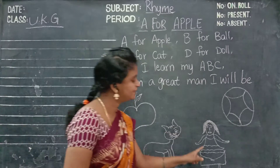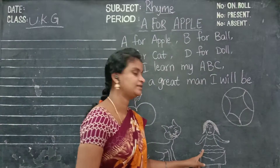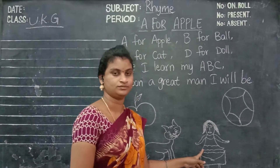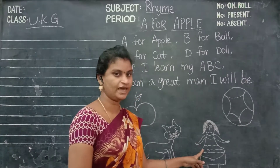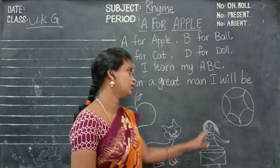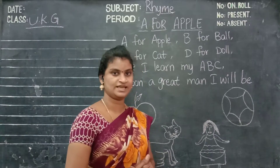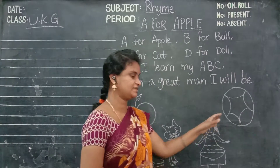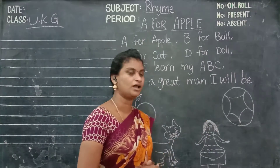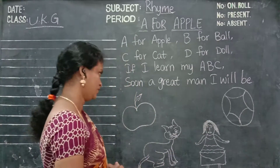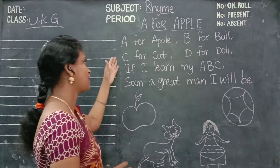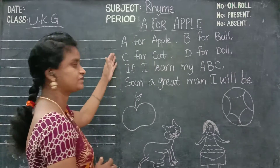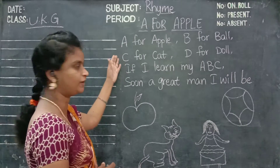What is this? This is a doll. What is this? This is a ball. Let us start right, set to right.